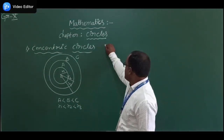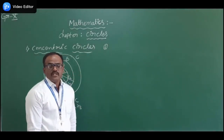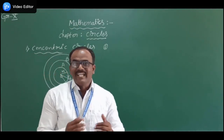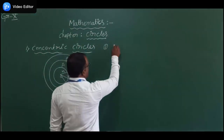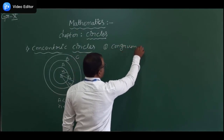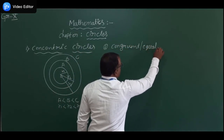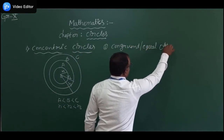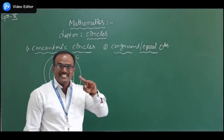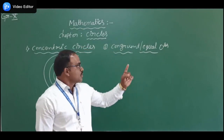Now we can move on to the next point, that is congruent circles. Congruent circles are also called equal circles. For circles we use this symbol — a small circle with a dot as a superscript — as the symbol for circles.